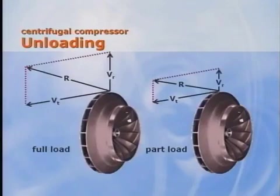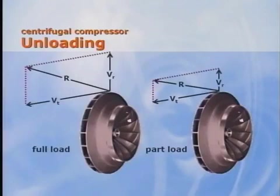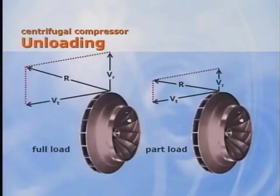Why would V sub T decrease with a constant impeller speed? We know that the impeller can't magically change diameter inside the compressor. V sub T becomes smaller due to the pre-swirling of the refrigerant caused by the inlet vanes. Since the refrigerant is already rotating as it enters the compressor, the effective rotational speed seen by the refrigerant is reduced. If variable speed drives are brought back into the picture, V sub T could also be reduced due to slower compressor speeds. When both vectors are reduced at part load, the resultant velocity vector R, which is proportional to the kinetic energy, is also reduced.